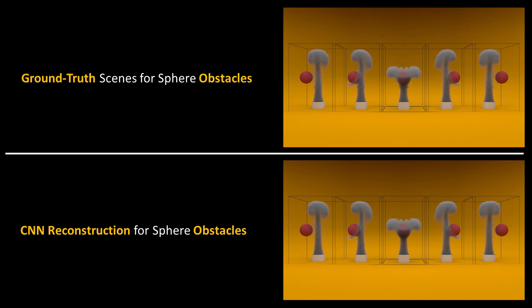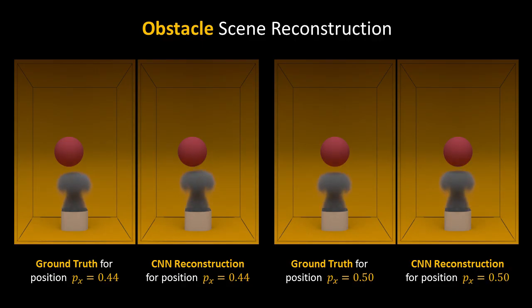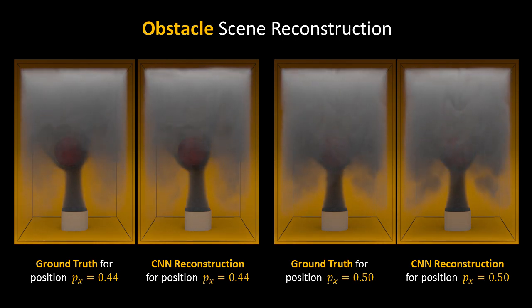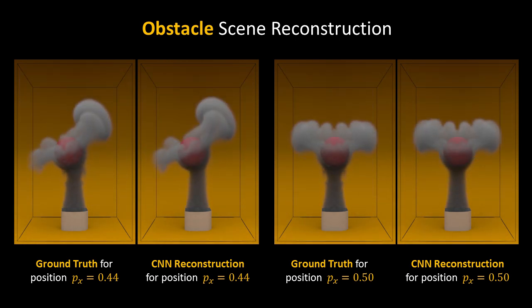Our network also handles scenes with obstacles. In this example, a smoke plume parameterized by different sphere positions is shown. Our approach is able to properly preserve no interpenetration constraints dictated by boundary conditions.